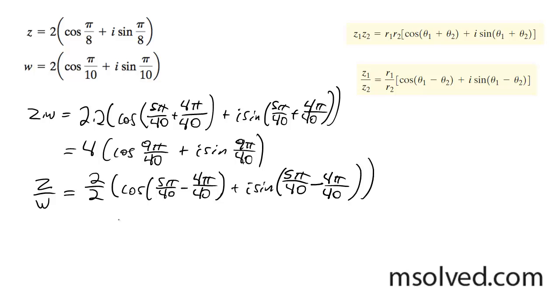Which finally gives us 1 and cosine of pi over 40 plus sine of pi over 40.